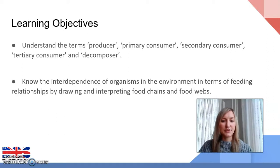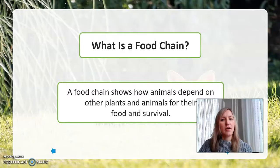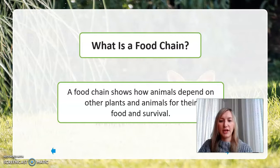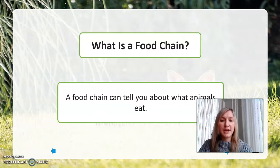We'll then look at the interdependence of organisms in the environment in terms of their feeding relationships by being able to both draw and interpret food chains and food webs. So we're going to start off by consolidating what we should understand already about food chains. Because a food chain shows how animals depend on other plants and animals for their food and survival. A food chain can tell us about what animals eat and what they are eaten by, and it also allows us to see how the flow of energy is passed on from one species in a food chain to another.